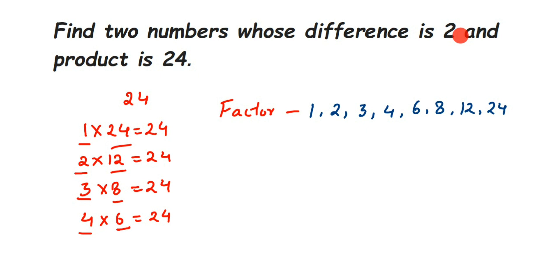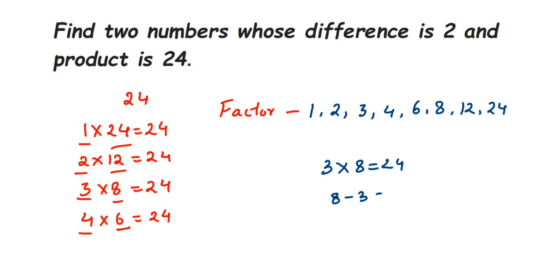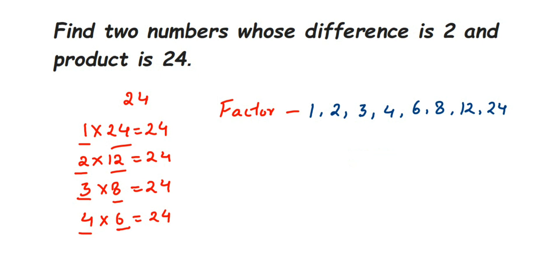We know 3 × 8 = 24, but 8 − 3 = 5, not 2, so that combination doesn't work. For 2 × 12 = 24, subtracting gives 10 — not 2. For 1 × 24 = 24, subtracting gives 23 — not 2. So none of these work.